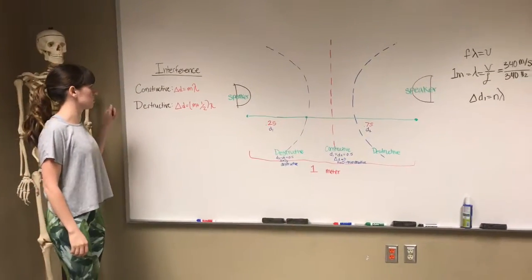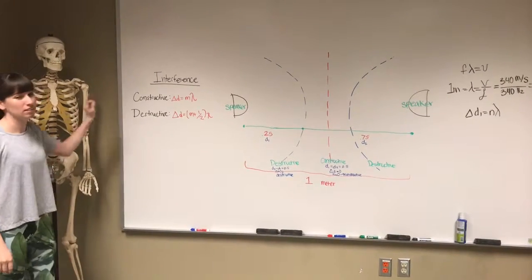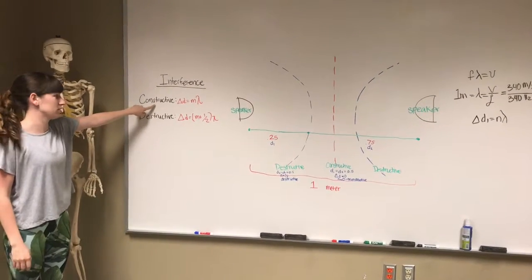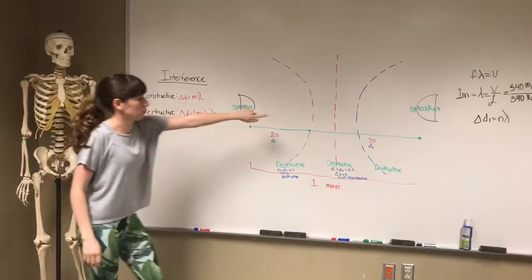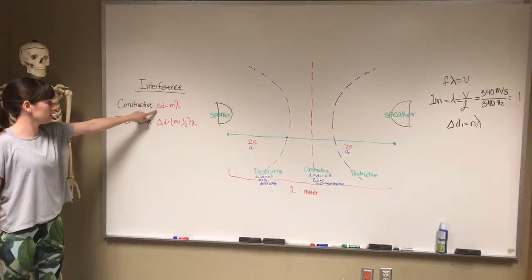All right, so I'm going to explain the different equations that we use for the interference patterns. The first interference pattern we have is constructive, which is the middle line right here. This is the equation we use to find the path length difference.